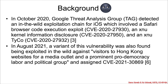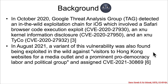Let's take a look at this zero-day vulnerability. In October 2020, Google Threat Analysis Group detected an in-the-wild exploitation chain for iOS, which had a Safari browser code execution exploit, an XNU information disclosure, and an XNU type confusion. In August 2021, they found a variant of this vulnerability being exploited against macOS users — visitors of Hong Kong websites for a media outlet and a prominent pro-democracy labor and political group — and this got a new CVE associated with it.